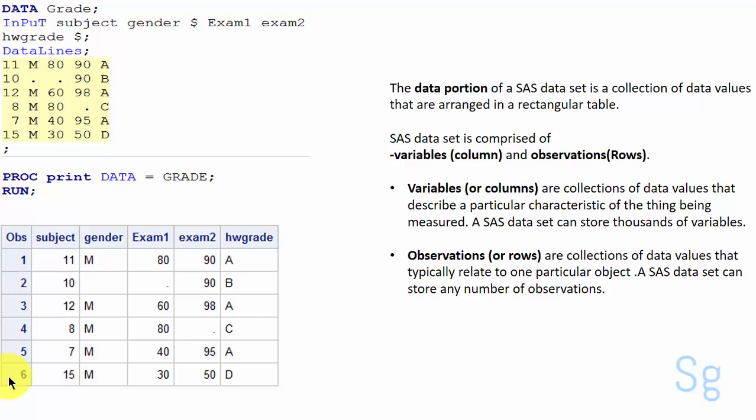In this example we have 6 observations and 5 variables: subject, gender, exam 1, exam 2 and homework grade.